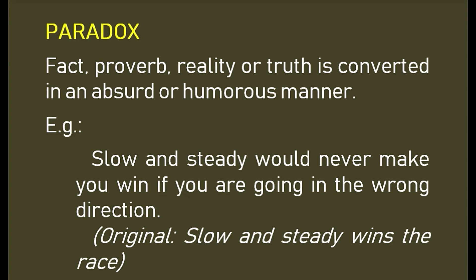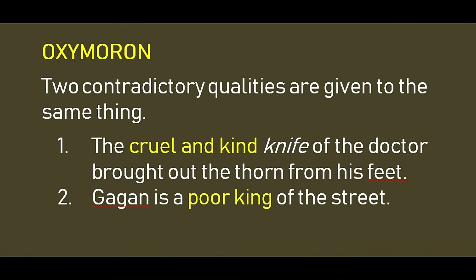Oxymoron: two contradictory qualities are given to the same thing. For example, 'the cruel and kind knife of the doctor brought out the thorn from his feet' — the knife is described as both cruel and kind. Another example: 'Gagan is a poor king of the street' — he is poor and also a king. When two contradictory qualities are given to the same person or thing, it is known as oxymoron.